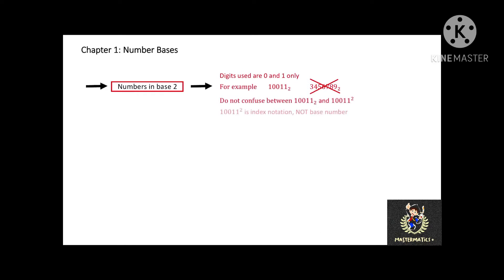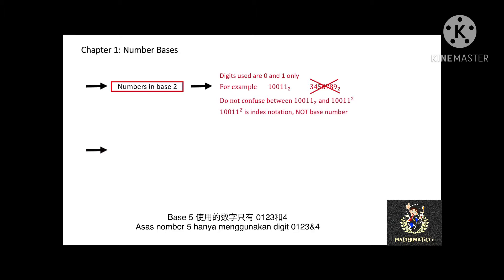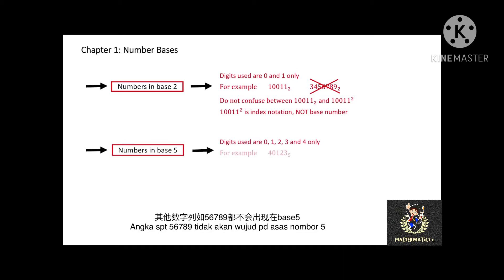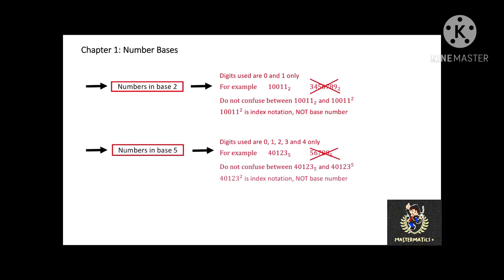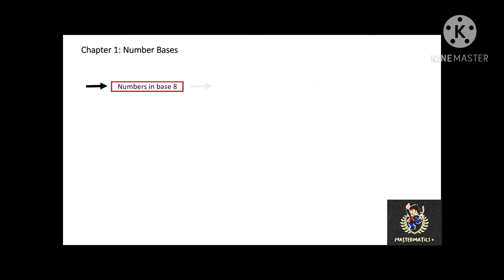For numbers in base 5, the digits used are 0, 1, 2, 3, and 4 only. For example, 40123 in base 5. You won't see other numbers such as 5, 6, 7, 8, and 9 in base 5.